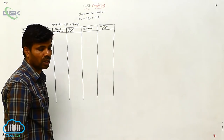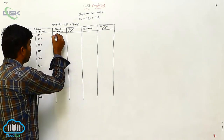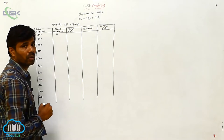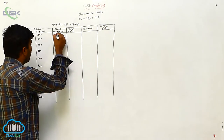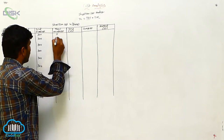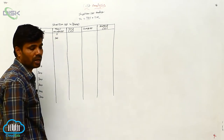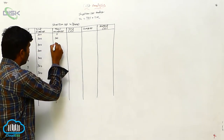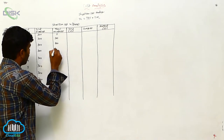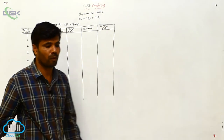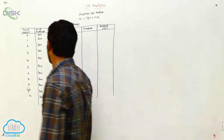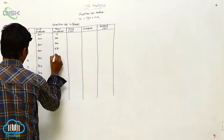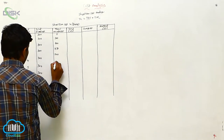Next is total variable cost. At zero output, TVC is 0. Then the values are: 300, 400, 450, 500, 600, 750.